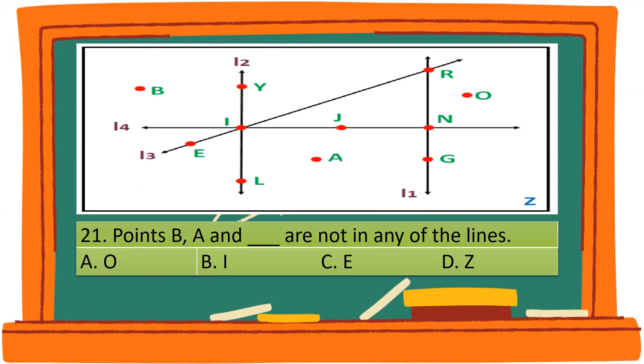Question 21. Points B, A, and blank are not in any of the lines. A. O. B. I. C. E. D. Z. The correct answer is A. O.